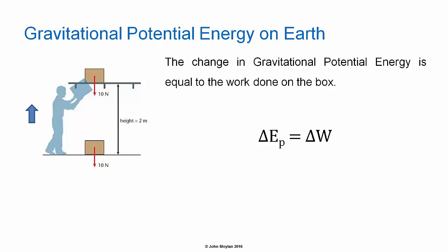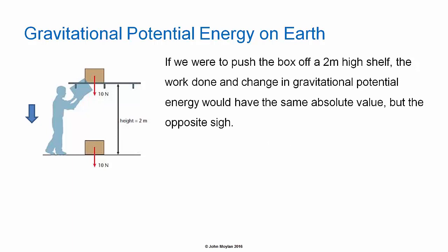The change in Gravitational Potential Energy is equal to the work done on the box, so we can write delta E subscript p, change in Gravitational Potential Energy, equals delta W, the work done on the box. If we were to push the box off a 2 meter high shelf, the work done and the change in Gravitational Potential Energy would have the same numerical value, the same absolute value, but would have the opposite sign.